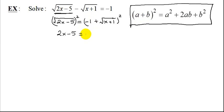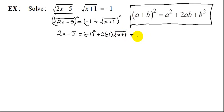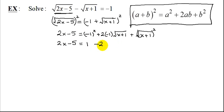So I'm going to square the first term: negative 1 all squared, plus twice the product — 2 times negative 1 times the square root of x plus 1 — plus the last term squared, which is the square root of x plus 1, all squared. So I get 2x minus 5 equals 1, minus 2 times the square root of x plus 1, plus x plus 1 — since squaring a square root gives the radicand.